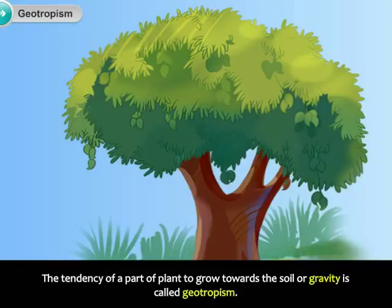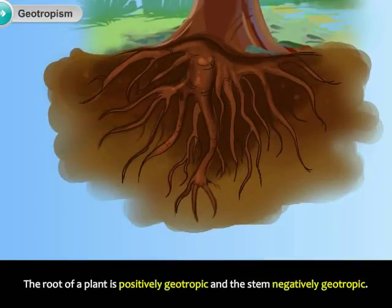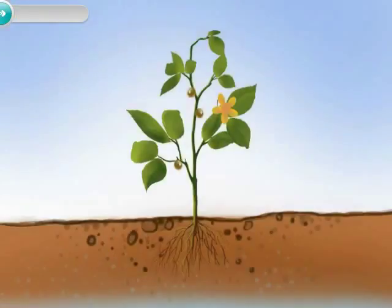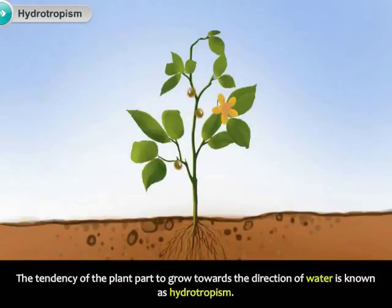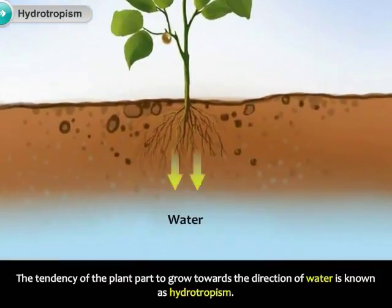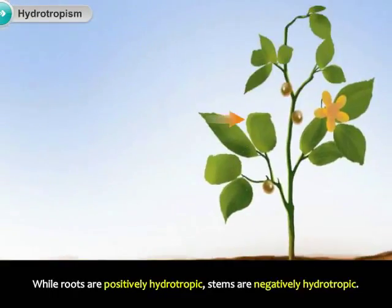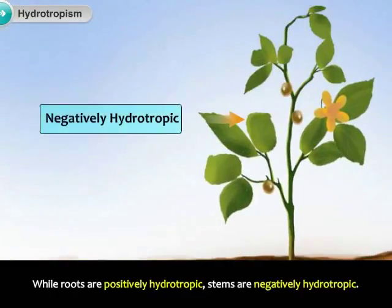The tendency of a part of a plant to grow towards the soil or gravity is called geotropism. The root of a plant is positively geotropic and the stem is negatively geotropic. The tendency of the plant part to grow towards the direction of water is known as hydrotropism. While roots are positively hydrotropic, stems are negatively hydrotropic.